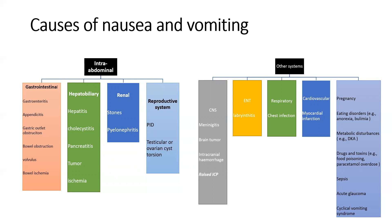A well-taken history with good differentials will be vital to guide the necessary investigations for a diagnosis. When you take a history, you must include three things: causes of the symptom, details of the symptom, and effects of the symptom on your patient. Sometimes multiple processes can be going on at the same time, so please be careful to double-check and identify and pick up life-threatening causes.